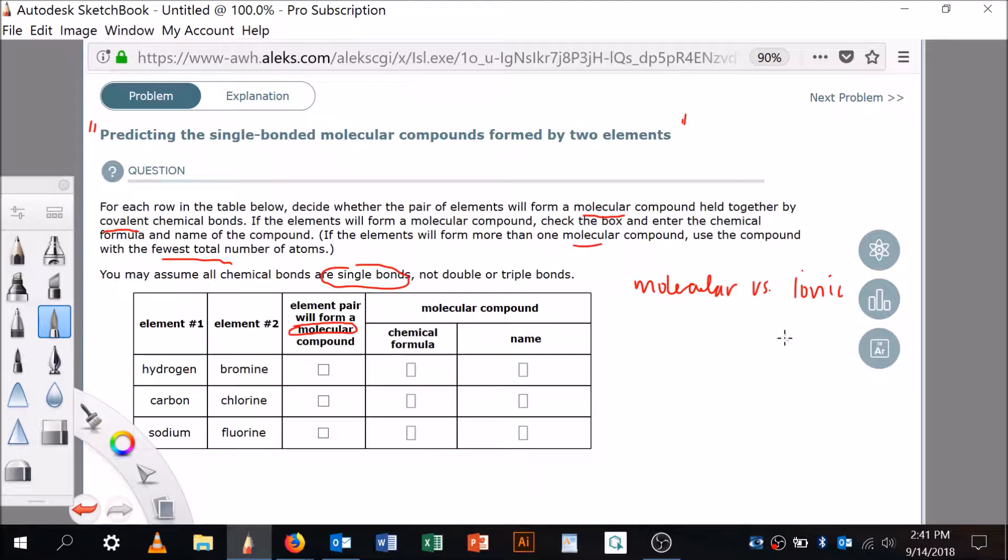Molecular versus what? Ionic. Aha, okay. Now, ionic means that there's a metal and a non-metal in there, right? So is hydrogen a metal? No. Is bromine a metal? No. It's a non-metal. So yes, they will make a molecular compound.